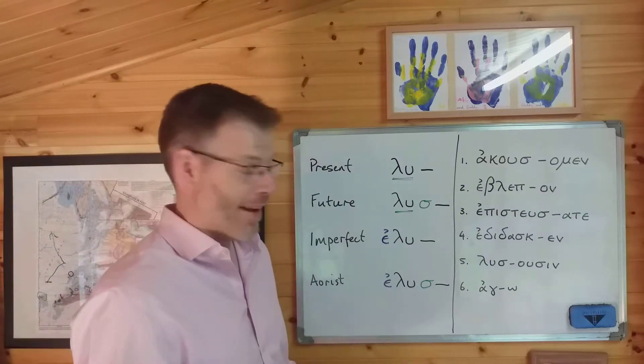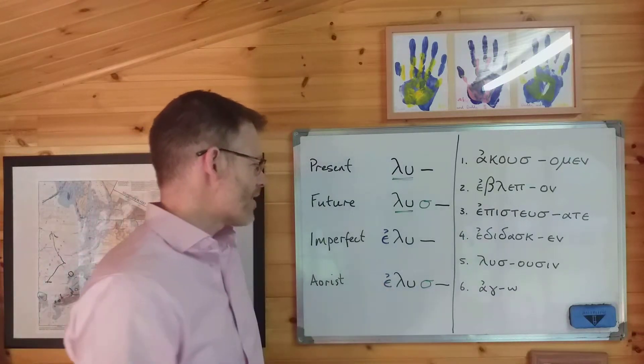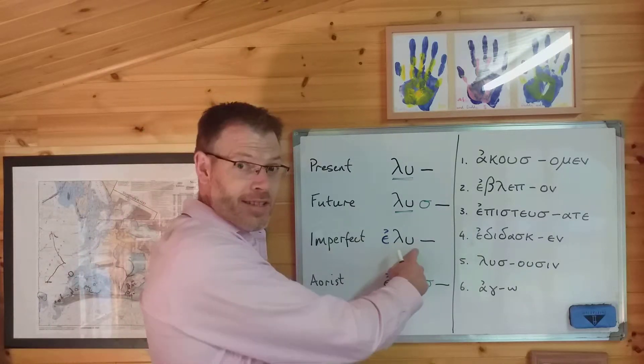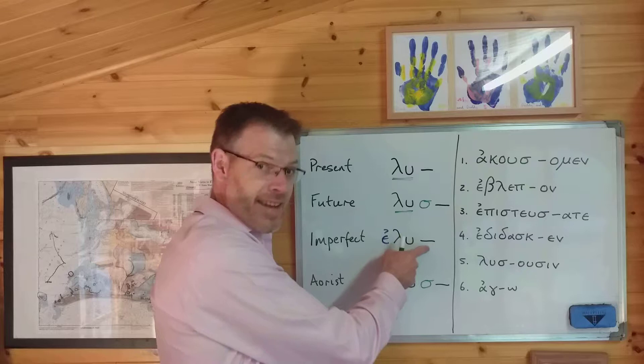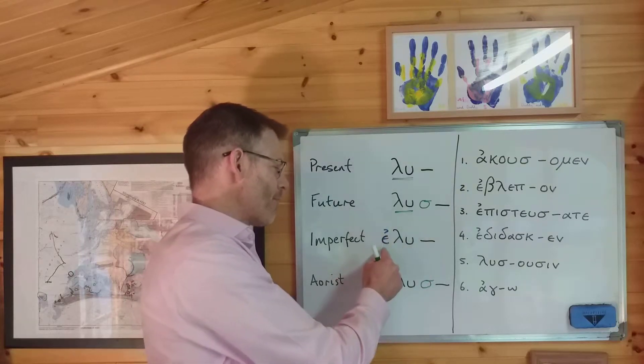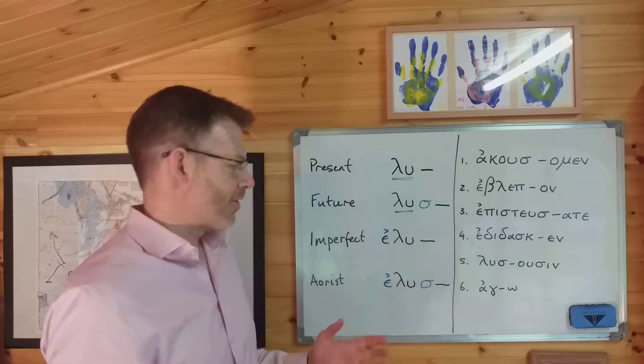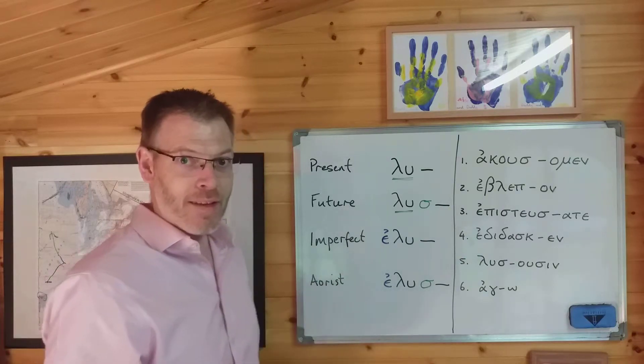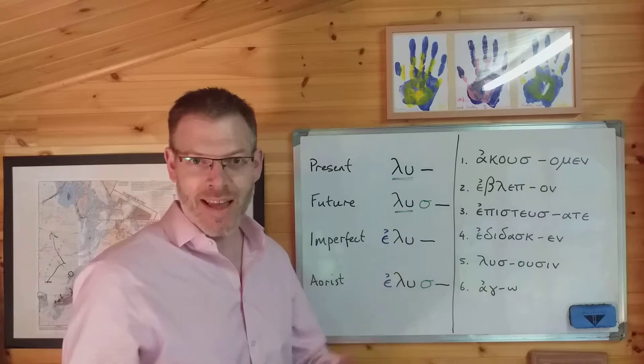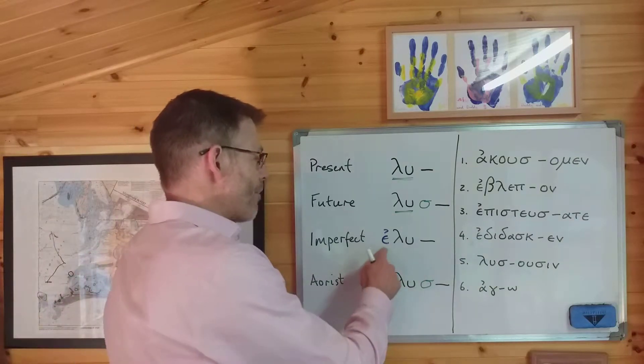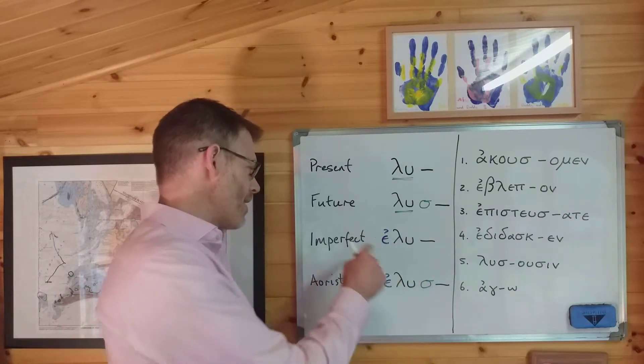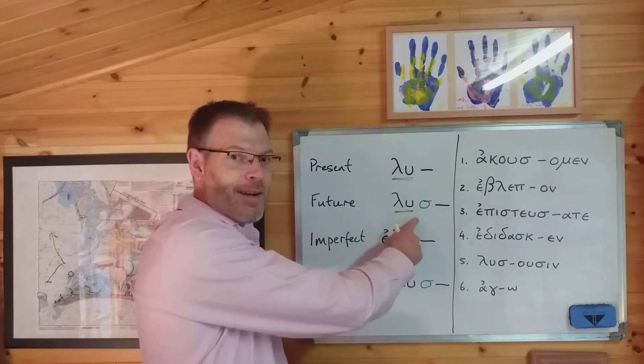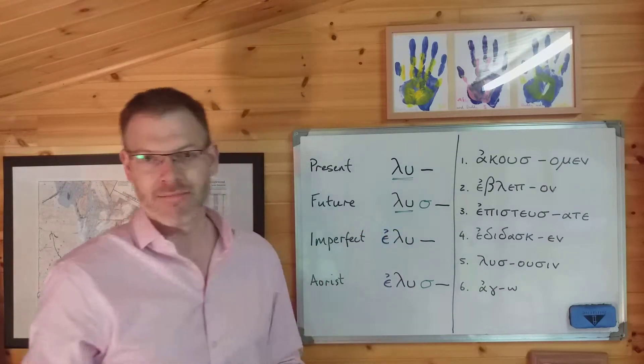So the way you know that a verb is in the future tense is if it's got a sigma suffix after the stem. Make sense? So you look for the sigma suffix and if you see one you think, 'Ah yeah, that's in the future.' How do you know if it's in the imperfect? Well, the imperfect has nothing after the stem, it's got λυ plus the ending, but you have something before the stem. This is called an epsilon augment.